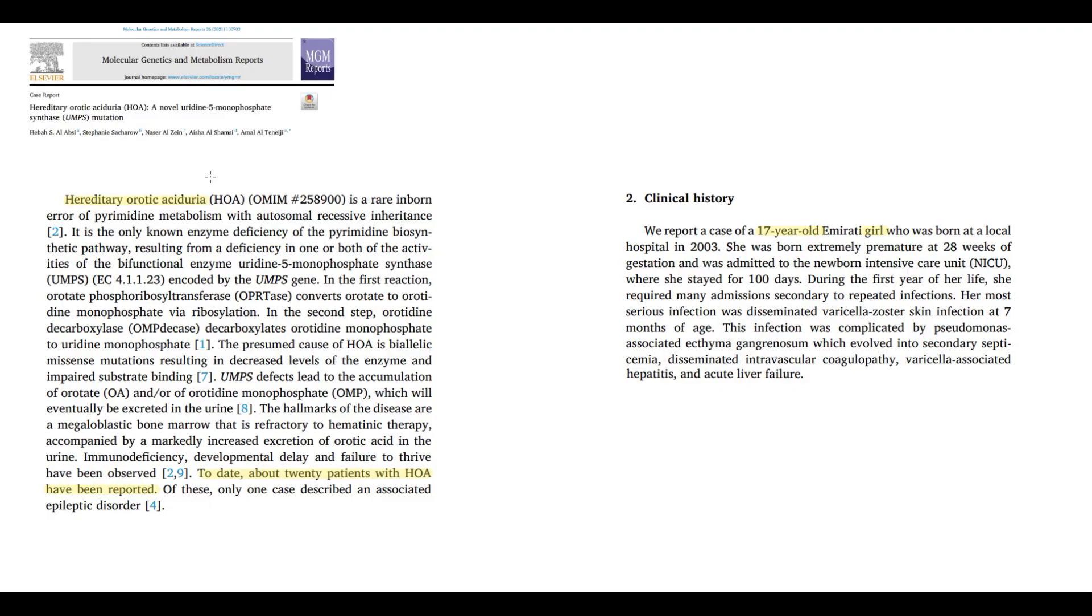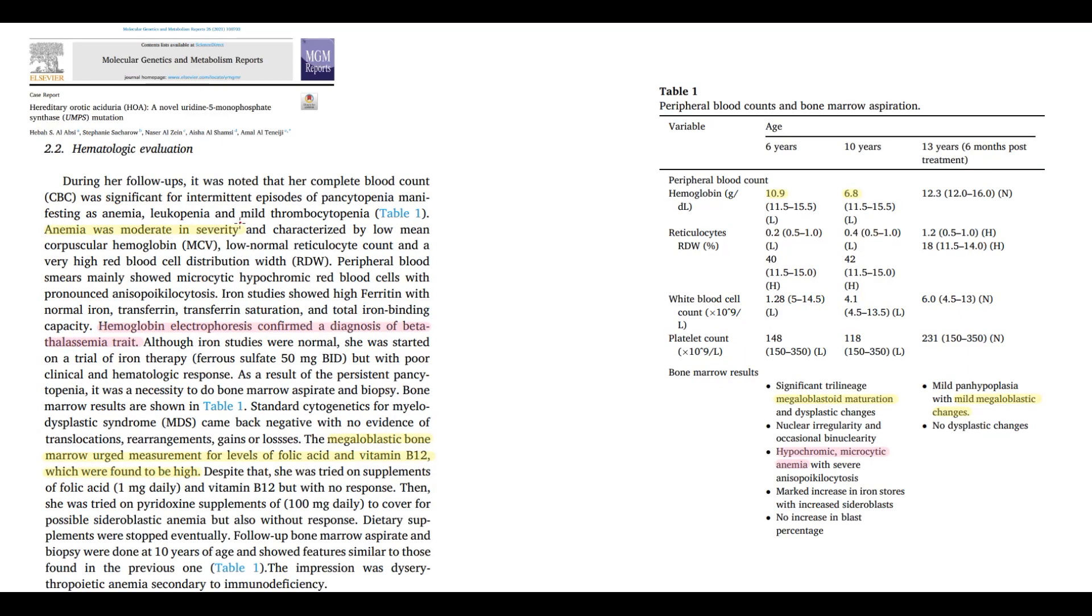There is a clinical case of a patient with erotic aciduria. And as we see, erotic aciduria is extremely rare disease. So in this case, it is a 17-year-old girl. This girl had moderate anemia, and we can see that when she was 6 years old, she had hemoglobin 109. But when she was 10 years old, her hemoglobin level was 68, which is severe anemia. In addition to this, she has beta-thalassemia.